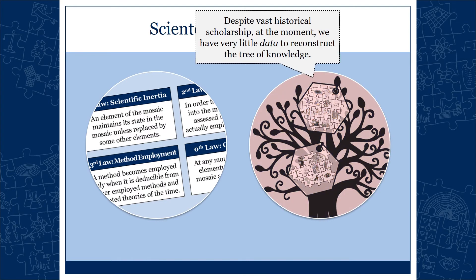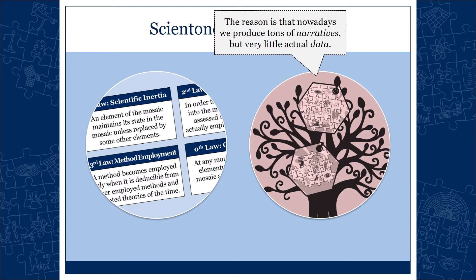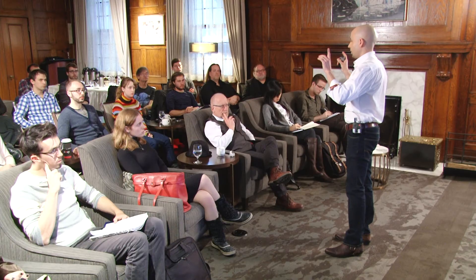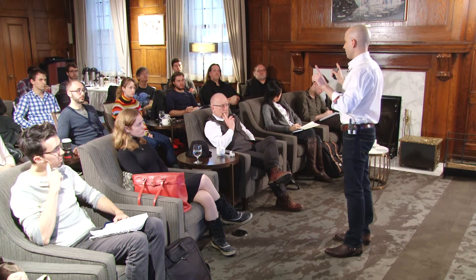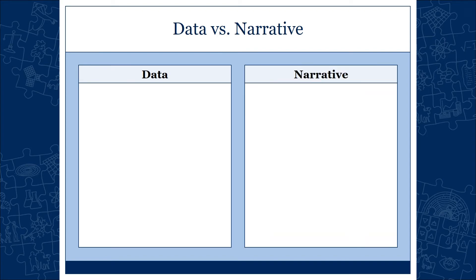Today the problem is that, despite vast historical scholarship, there is little data available to reconstruct the tree of knowledge. The reason is that we mostly produce narratives, but very little in terms of data. The difference between the two is very important — unless we understand that difference, we're not going to move forward. Data requires, among other things, a universal taxonomy.